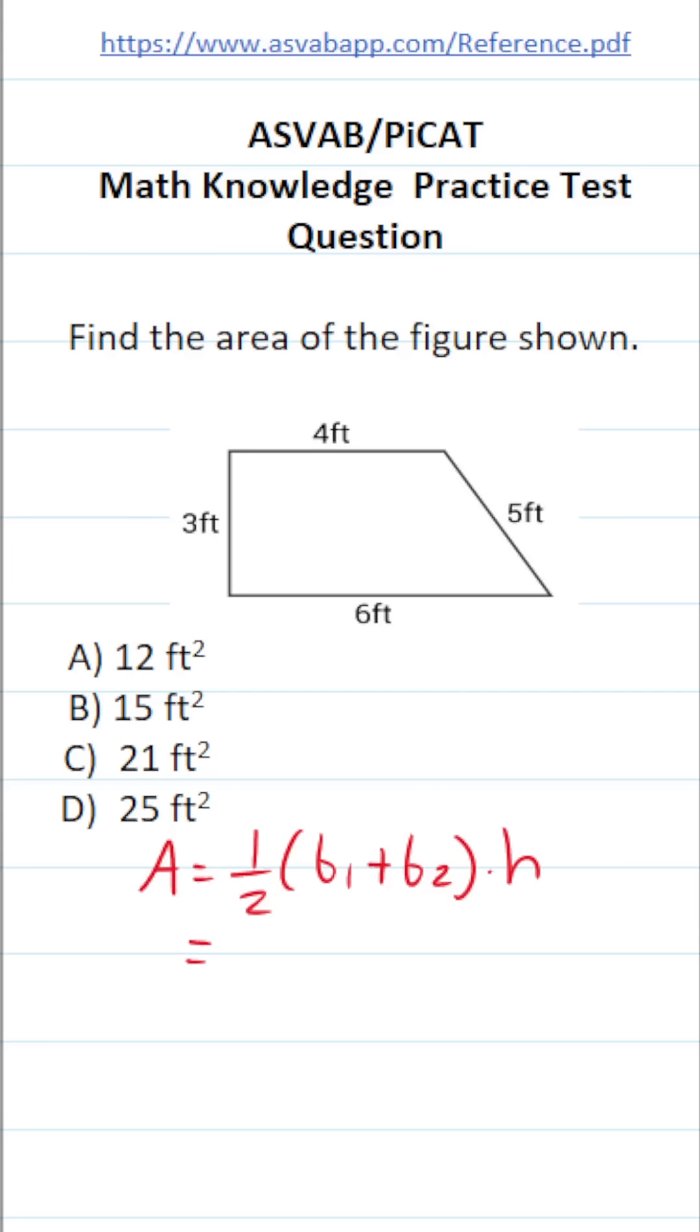So all we have to do is identify base one and base two, as well as the height of the trapezoid. Base one is right here, it's going to be 4 feet, and base two is right here, it's going to be 6 feet. And we can see that the height of this trapezoid is 3 feet.